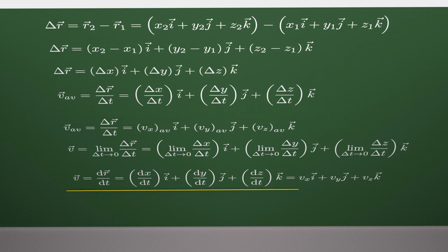Of course, instantaneous velocity can be expressed by its three components: dx per dt, dy per dt, and dz per dt.